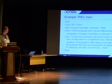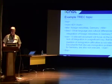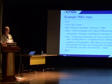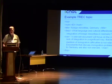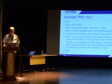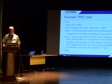An example TREC topic looks like this. You have markup to identify it as a topic, a topic ID, and then a very short keyword in the title field — in this case, 'ethnic minorities in Germany.' There is a somewhat longer description, typically a full sentence describing the information need, and a much longer narrative field, which is mostly intended for relevance assessors to distinguish between relevant and non-relevant documents.